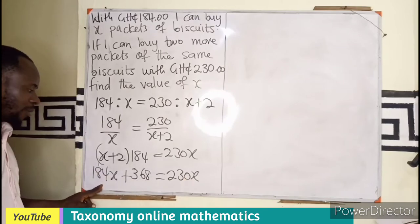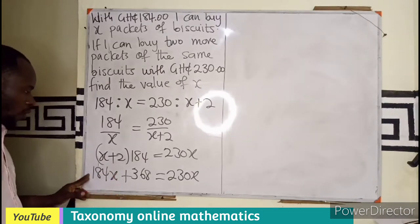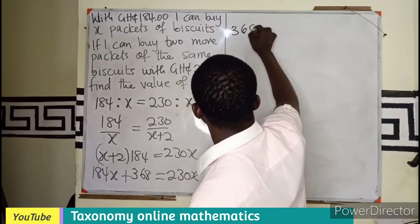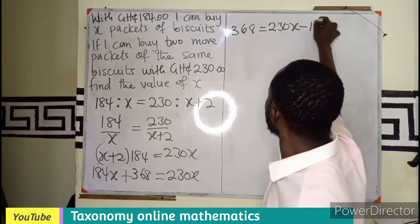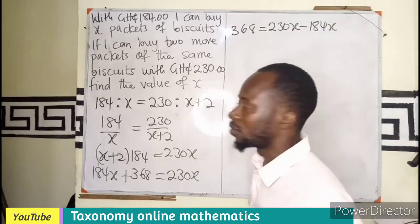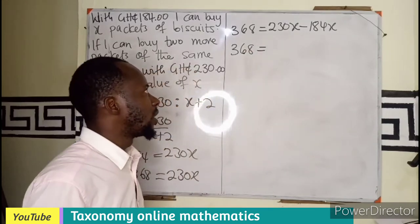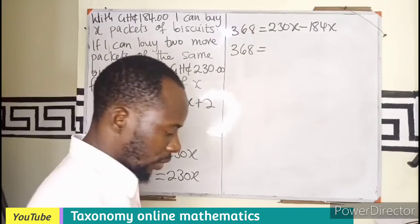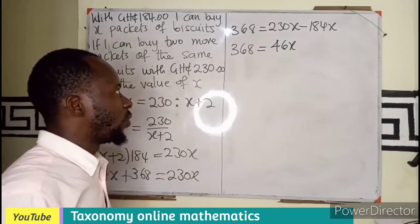Constant variable variable. So what happened here? We cross multiply. Here we group items. So this will be coming to this, maintaining this. So I have my 368 equals to 230X minus 184X. So I still maintain my 368 equals to the subtraction of that value. If you subtract that, that will give us 46X.